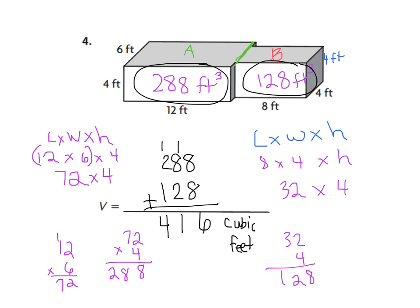That's how you find this volume. Our whole goal is to find the volume of rectangular prism A and B, and then add the two combined volumes together.